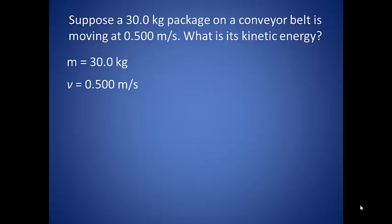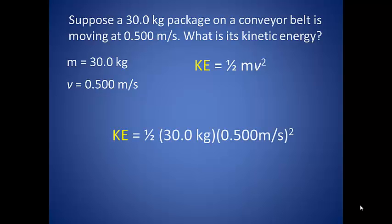Suppose a 30 kilogram package on a conveyor belt is moving at 0.500 meters per second. What is its kinetic energy? When we know the mass and we are given the velocity, we want to know the kinetic energy. This works well for us because our equation for kinetic energy involves both the mass and the velocity. Plugging this in, we get 3.75 joules of kinetic energy.